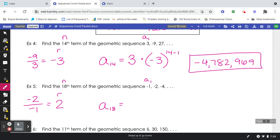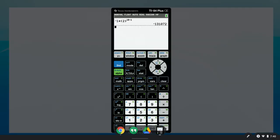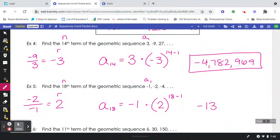So a sub 18 equals negative 1, the first term, multiplied by the r raised to the exponent of n, 18, minus 1. We'll type that into the calculator. Negative 1 times 2, exponent of 18 minus 1. Negative 131,072.